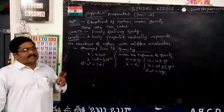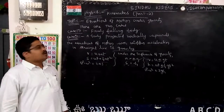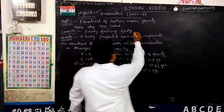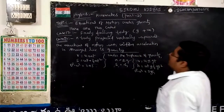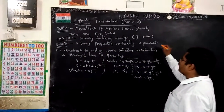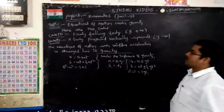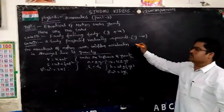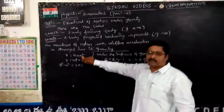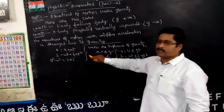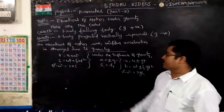Let us see the equations of motion under the influence of gravity. There are two cases. Under the influence of gravity, the first case is freely falling body. For a freely falling body, G is taken as positive. And for a body projected vertically upward, G is taken as negative. The equations of motion for uniform acceleration in a straight line are: V = U + AT, S = UT + ½AT², and V² - U² = 2AS.